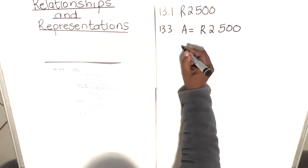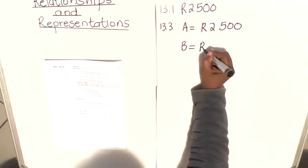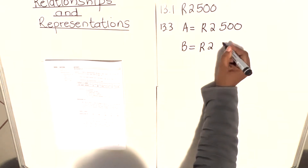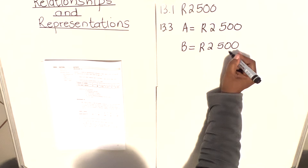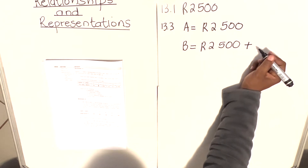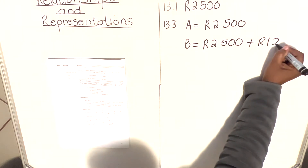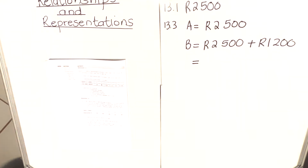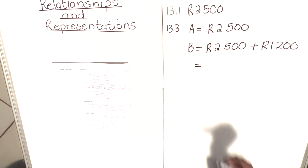For value B, he gets his basic salary of R2 500 plus R1 200 for signing up one client, so the total amount for B is R2 500 plus R1 200, which equals R3 700.